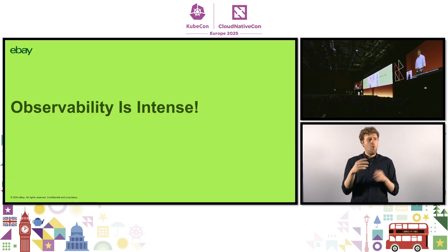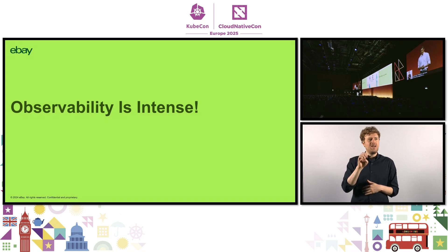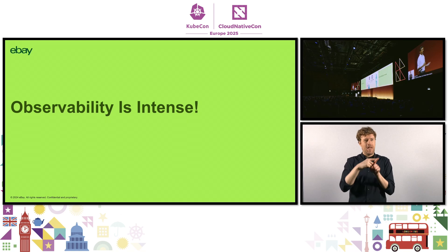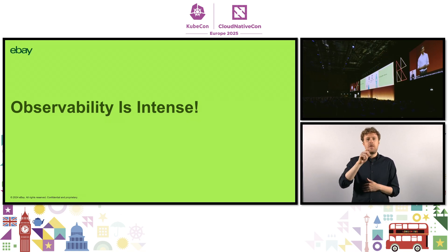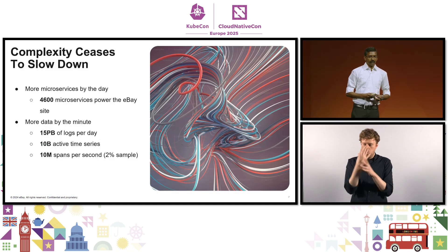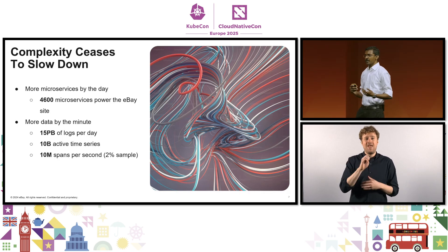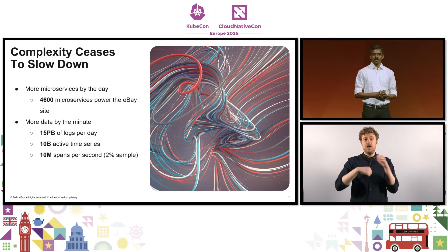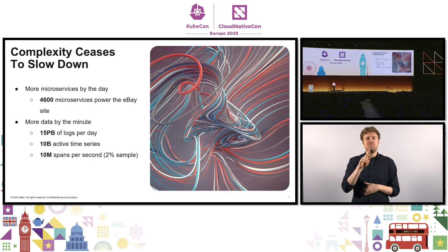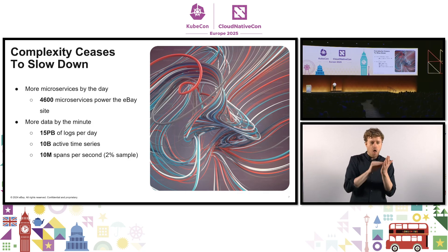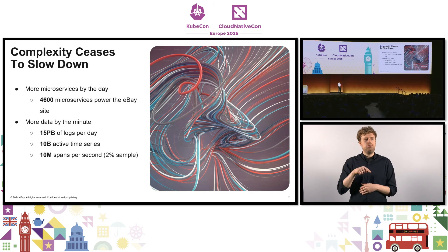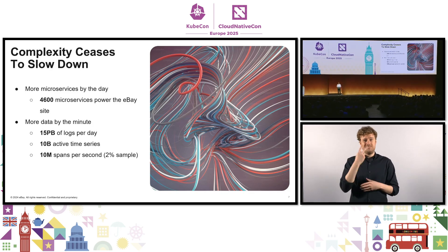Let's start off by saying that observability is intense. Out of the 13 years at eBay, 10 of them I've spent on either logging or monitoring — now observability as we like to call it — and the scale of operations has exploded over the last five years or so. Complexity doesn't cease to slow down. Within eBay, we have roughly 4,600 microservices powering the site. We generate 15 petabytes of logs per day, 10 billion active time series, and 10 million spans per second sampled at roughly 2%.